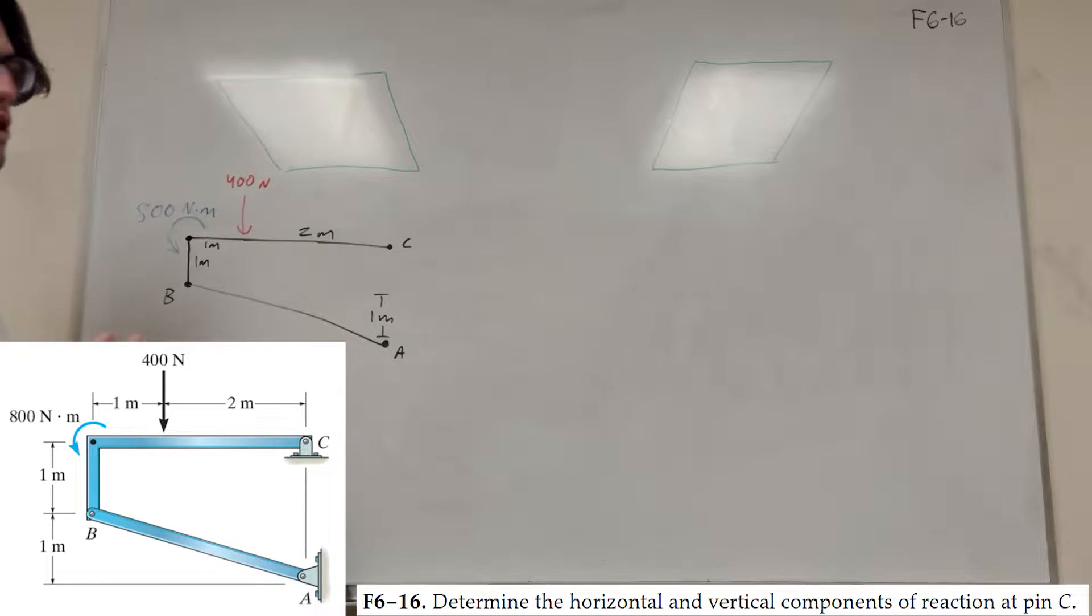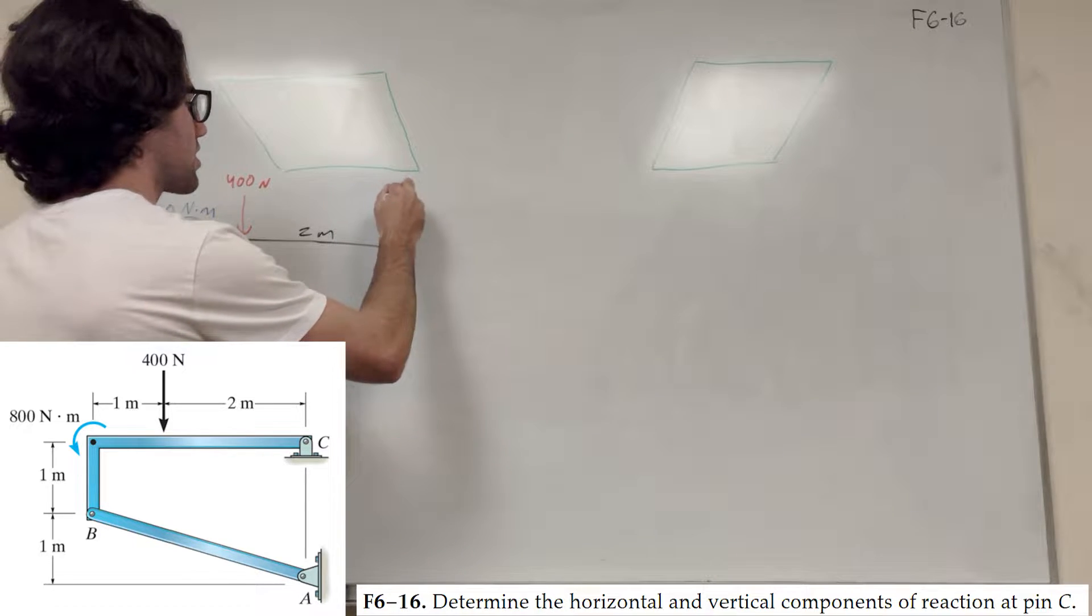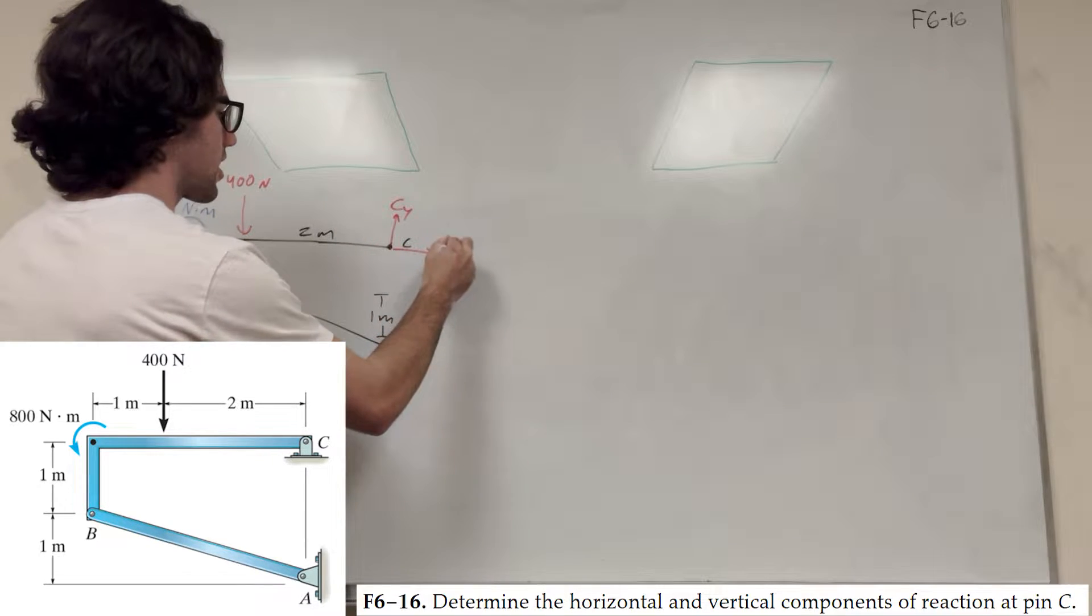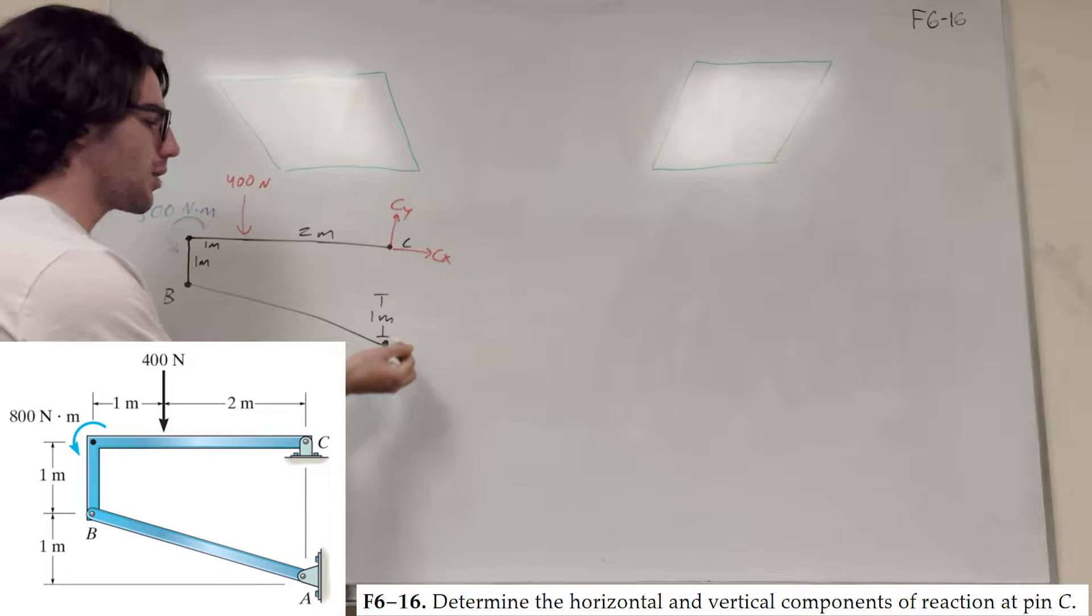So C is a pin. So C is going to have a vertical and horizontal component. So this is Cy and then Cx. I'm just drawing them in the positive direction. And so is A. A has Ay and Ax.